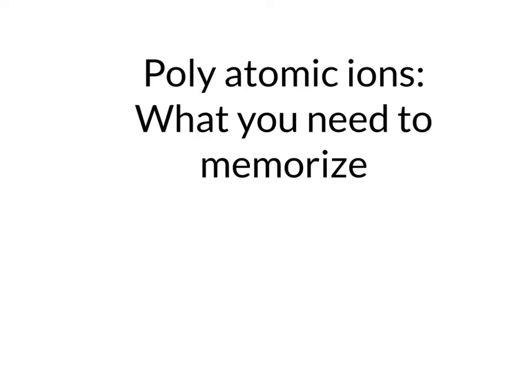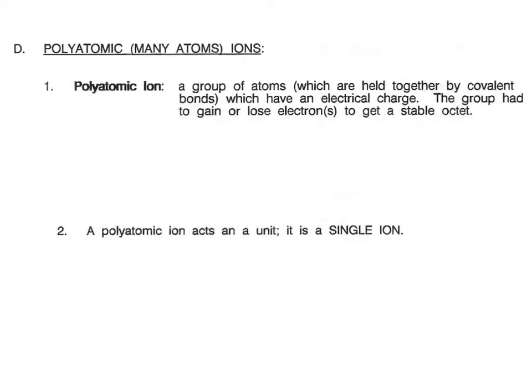Let's talk about polyatomic ions. These are ions that have several atoms present with an overall total charge that they all share. The definition of a polyatomic ion: it is a group of atoms held together by covalent bonds which have an electrical charge. The whole group is charged, but the parts of it have covalent bonds.